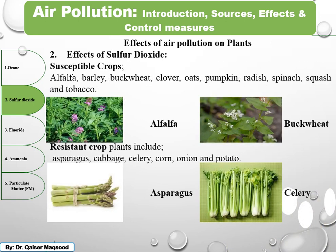Among the susceptible crops to sulfur dioxide are alfalfa, buckwheat, barley, clover, oat, pumpkin, radish, spinach, squash, and tobacco. Among the resistant crops are asparagus, cabbage, celery, corn, onion, and potato.